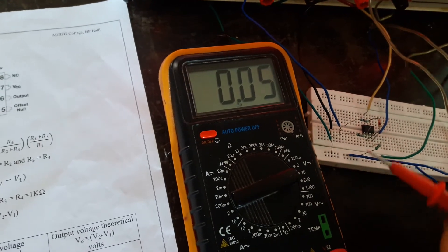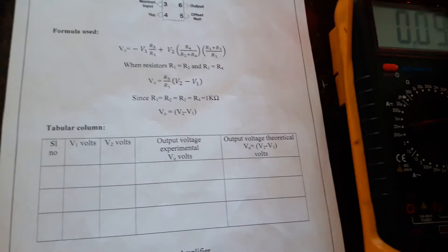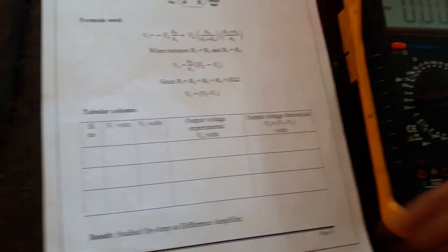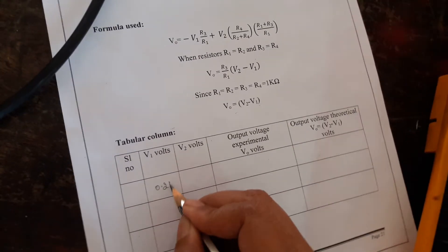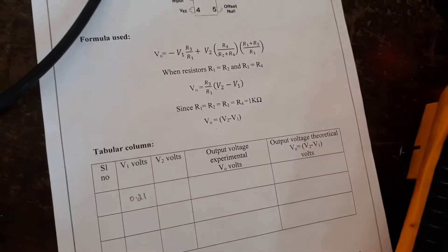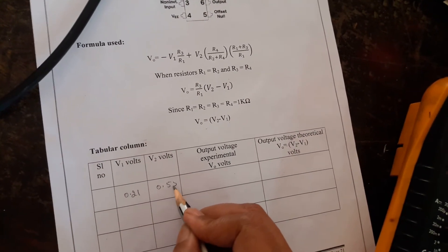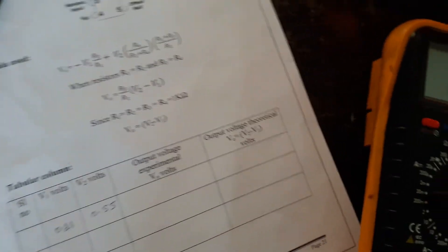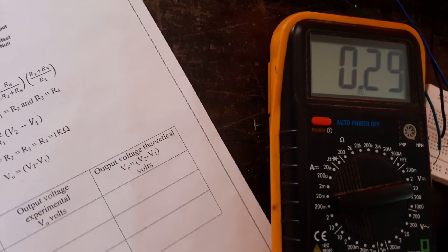Then we have to take a difference of these two. Now I will tabulate the readings. I will take the readings one more time here. This is V1 we are getting it as 0.21 and V2 we are getting it as 0.55, and output we have to measure at pin number 6. This is coming around 0.29.